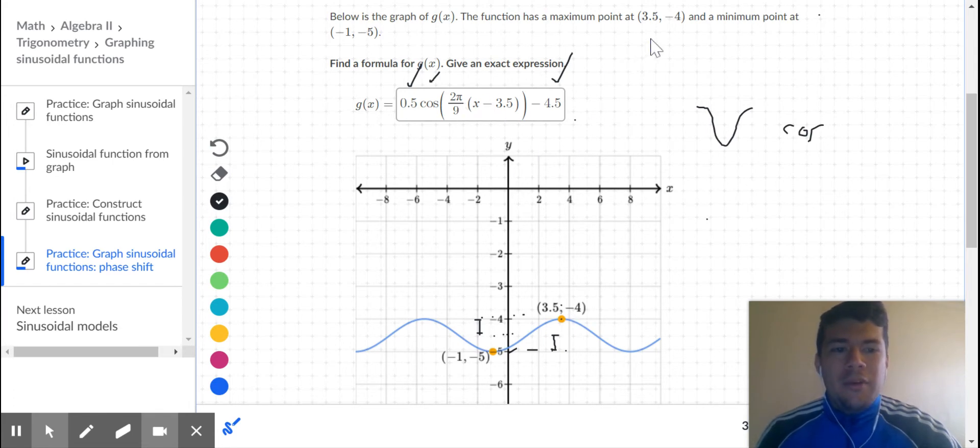To find the b value, it's as simple as this: T equals 2π over b. So I don't know the b value, which means I should know the T value.